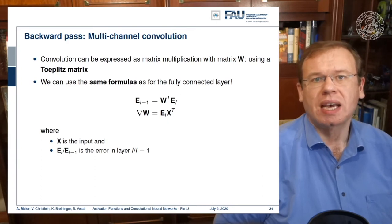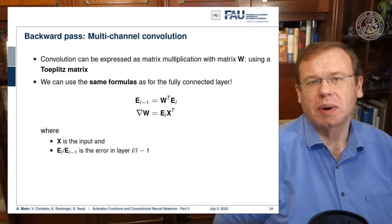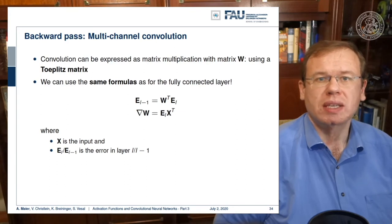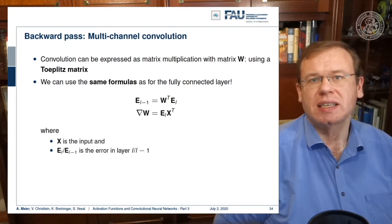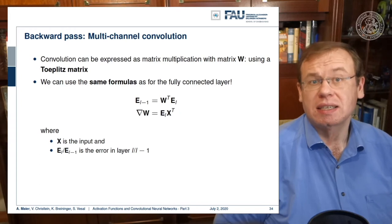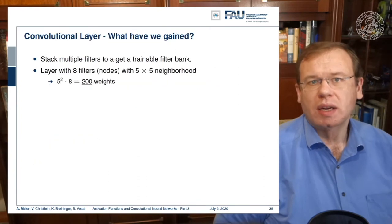If you want to compute the update for the weights, it's essentially the error from the input in the forward pass transposed. It's exactly the same update formulas as we have seen previously for the fully connected layers. This is nice, and there is not so much to keep in mind. Of course you have to make sure that you get this weight sharing implemented correctly, which we'll show you in the exercises. For us now we can just treat it as matrix multiplication.